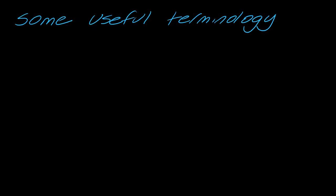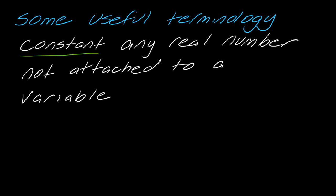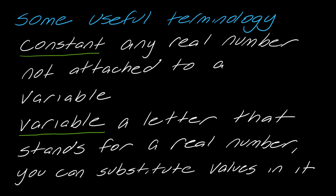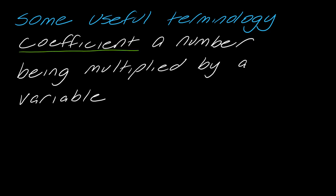Okay, so we're going to start with some terminology. A constant is any real number not attached to a variable. A variable is a letter that stands for a real number and you can substitute values in it. And finally, a coefficient is a number being multiplied by a variable. These are three terms that get used a lot, so it's helpful to know what these actually are.